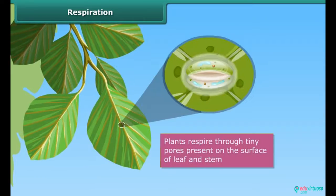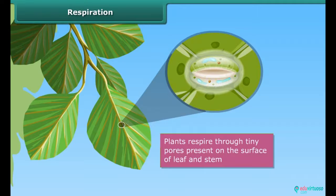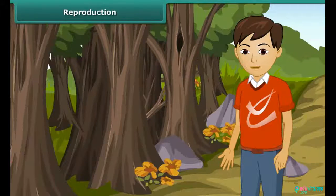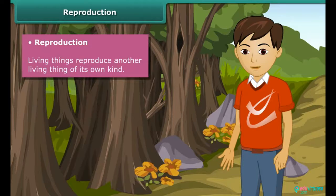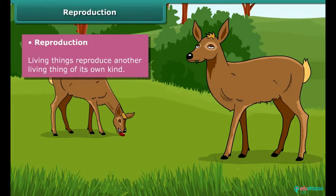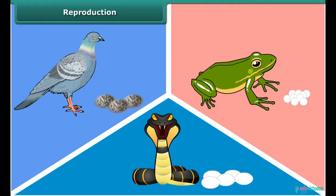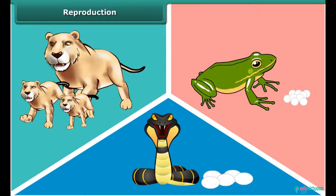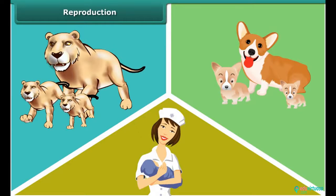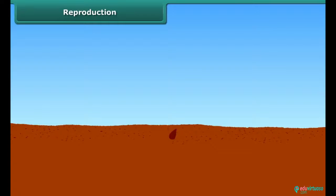Plants respire through tiny pores present on the surface of leaves and stems. A very important characteristic of living things is reproduction — all living things have the ability to reproduce another living thing of their own kind. Animals like pigeons, snakes, and frogs lay eggs, while animals like lions, dogs, and humans give birth to young ones. Plants reproduce through seeds or other parts of the plant.